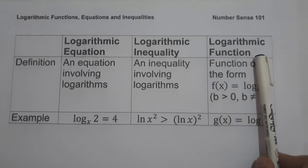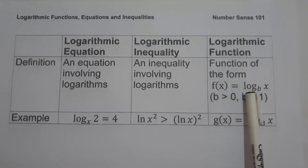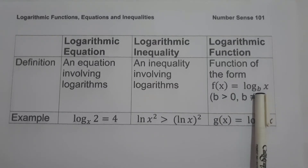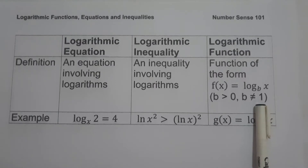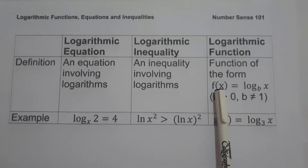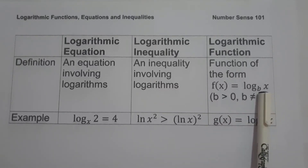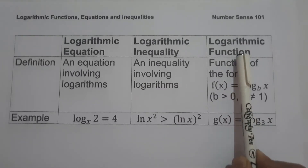When we say logarithmic function, it is a function written in the form f(x) = log_b(x), where b is greater than 0 and b is not equal to 1. For example, g(x) = log_3(x). This function is written in the form f(x) = log_b(x) where b is not equal to 1 and greater than 0. Therefore, this one is an example of a logarithmic function.